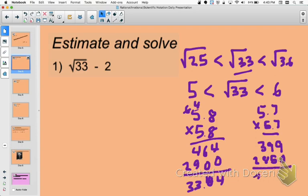When I add up my columns here, I'm getting 32.49. Okay, and 32.49 is just a tiny bit closer than 33.64. Okay, so what that tells me is that my estimate for the square root of 33 is 5.7.